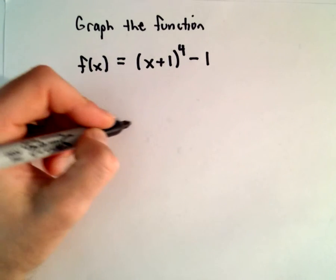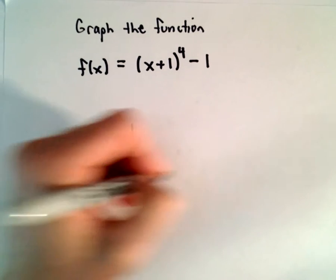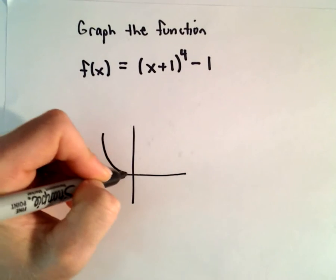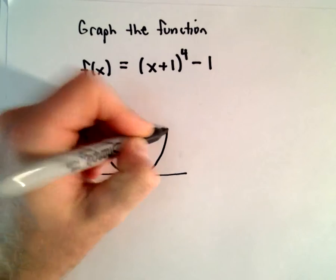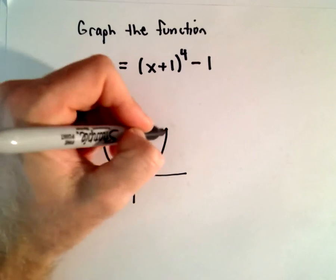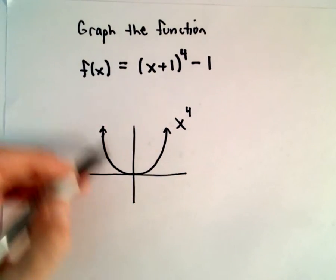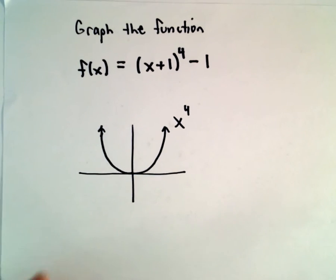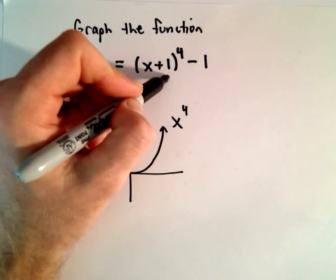The thing I'm going to do is think about some graph shifting. x^4 looks a lot like x^2. It has that same U shape to it. So that's going to be the graph of x^4.